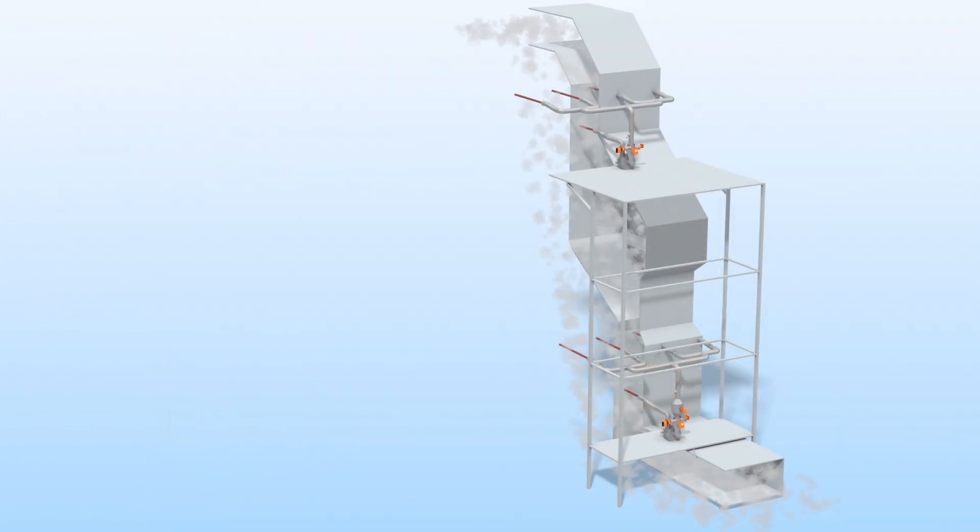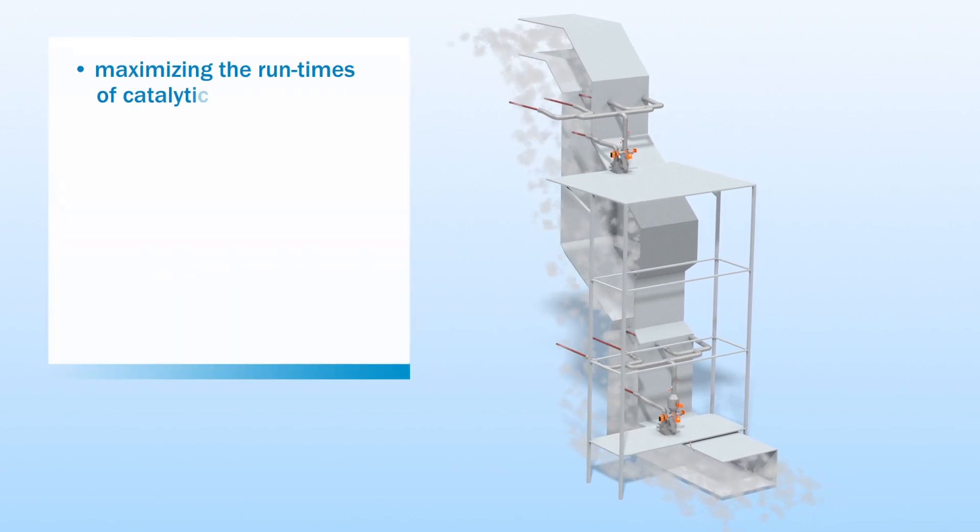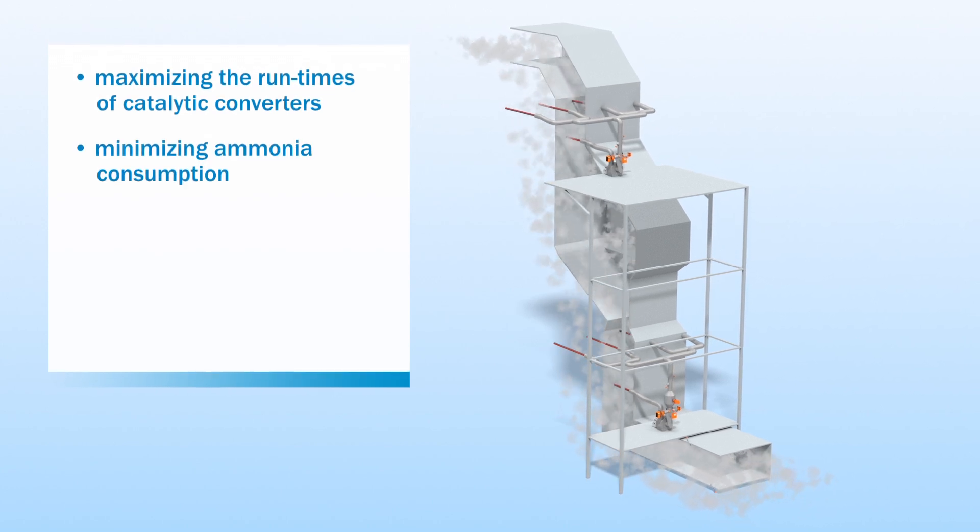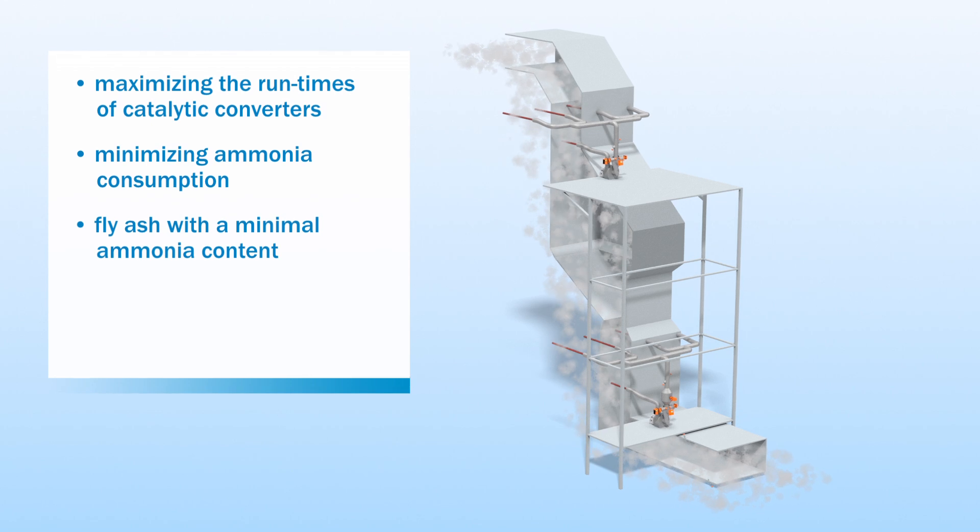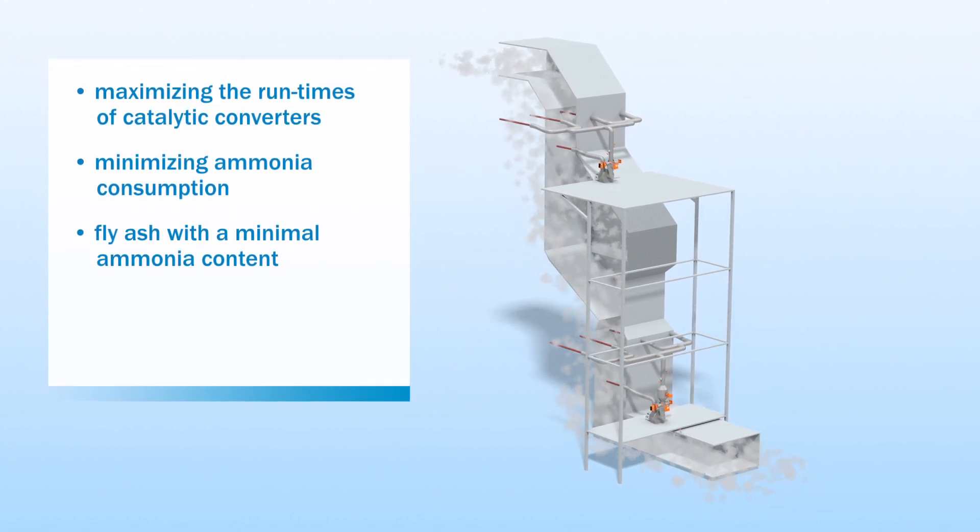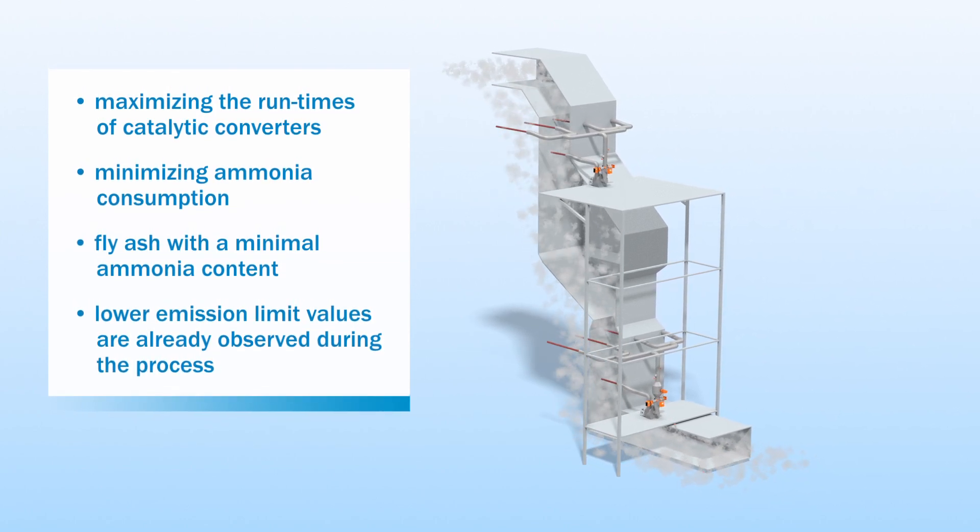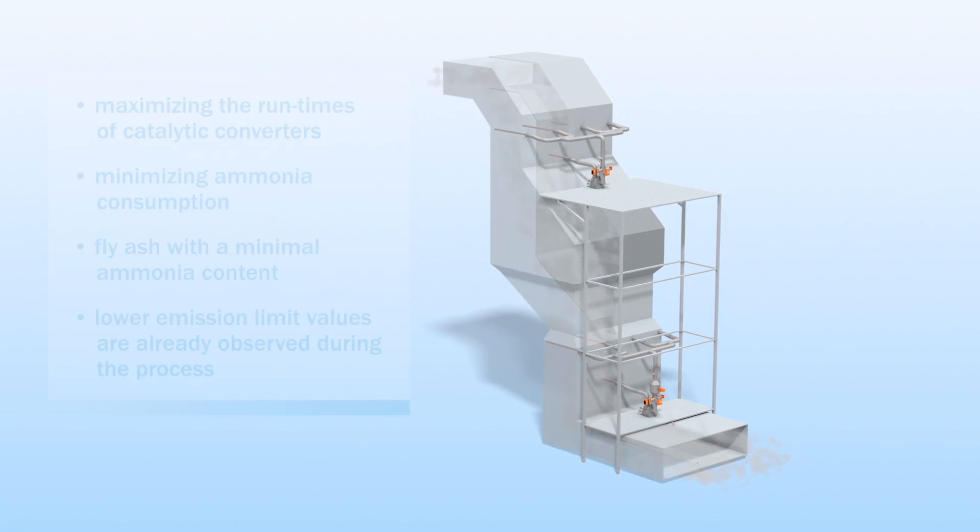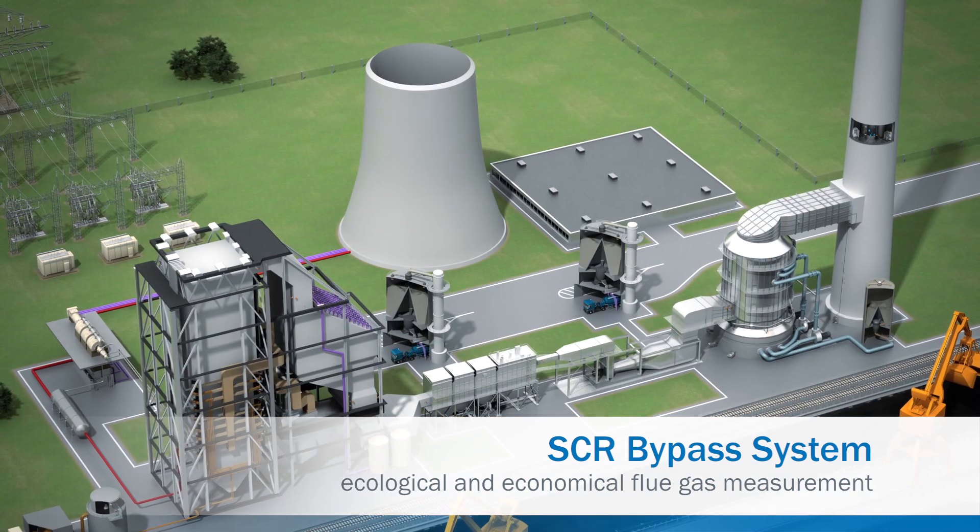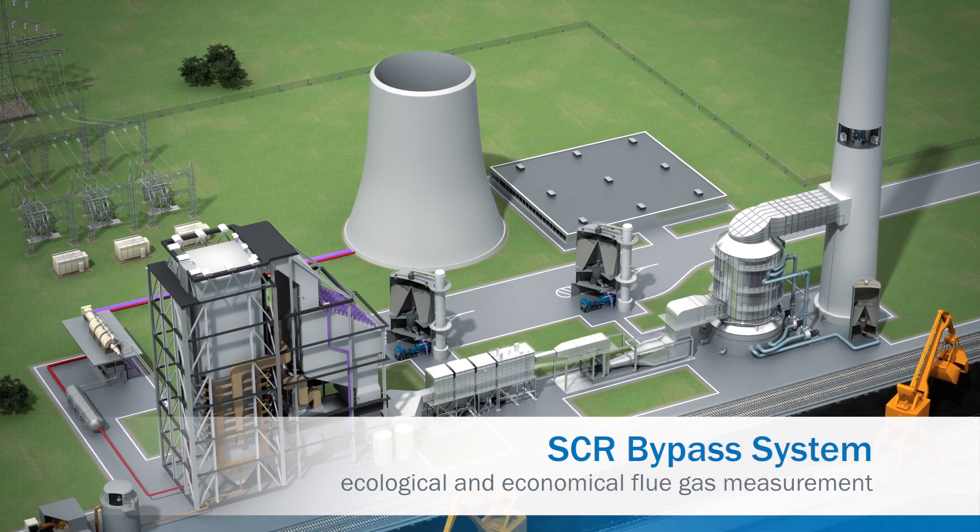The bottom line is that this saves money and quickly makes the investment worthwhile. Maximizing the run times of catalytic converters, minimizing ammonia consumption and also producing fly ash with a minimal ammonia content for further utilization. Last but not least, lower emission limit values are already observed during the process. The SCR bypass system from SICK provides ecological and economical flue gas measurement for large as well as small process ducts.